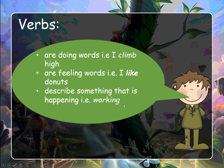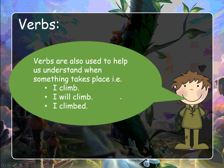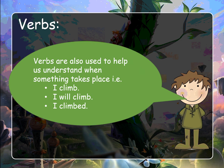'The robot is working.' Verbs are also used to help you understand when something takes place — for example, 'I climb', 'I will climb', 'I climbed'. Each one of those tells you — the verb or verb string — tells you when something's happening.